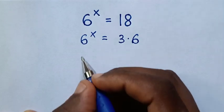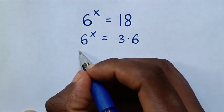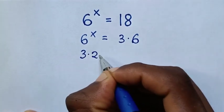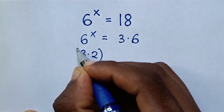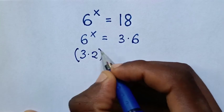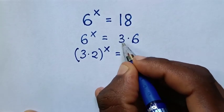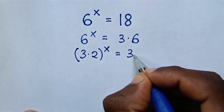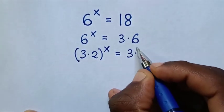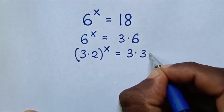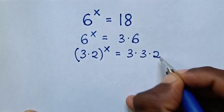Then, 6 is the same as 3 times 2, so the bracket 3 times 2, power of x, is equal to 3 times 6, which is the same as 3 times 3 times 2.